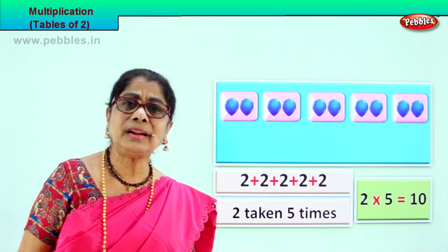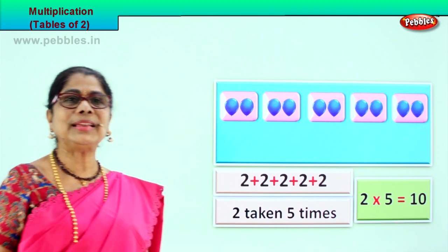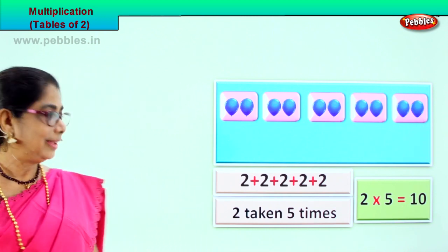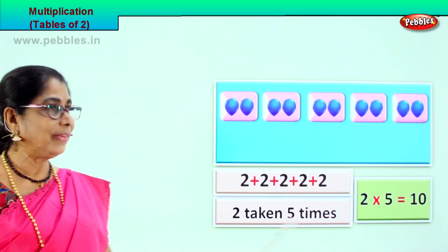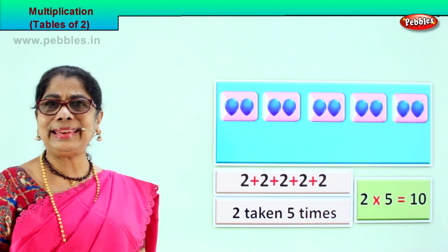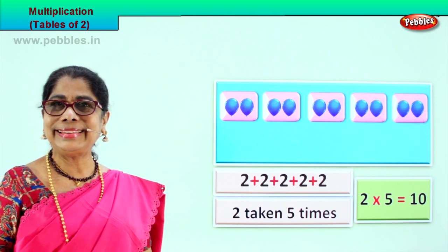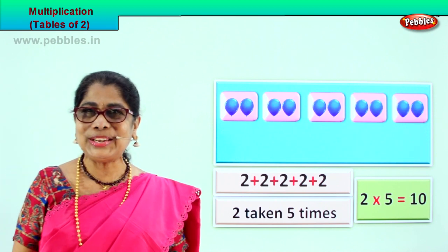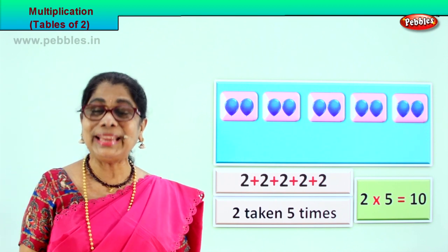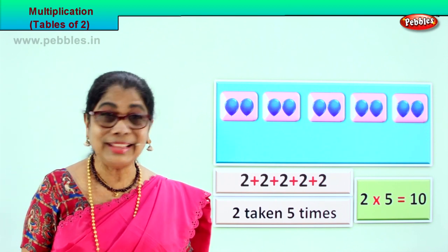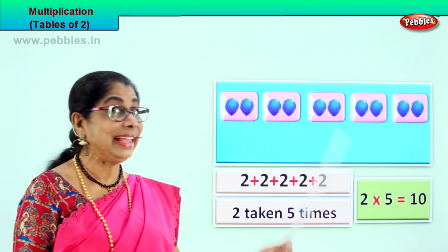Two fives are ten. Two taken five times is ten. Yes, did you enjoy? Good. You can see and read it yourself.